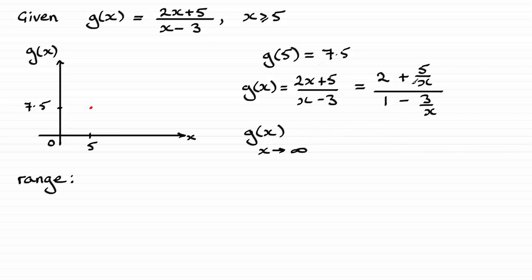Well, what we're going to get here is this term here, 5 over a very large positive value, that's going to tend to 0.